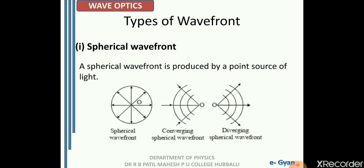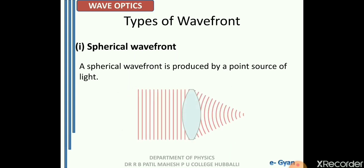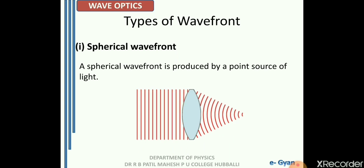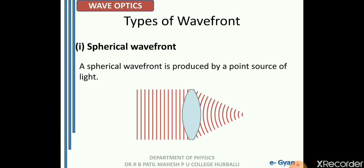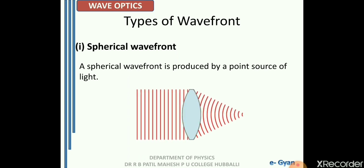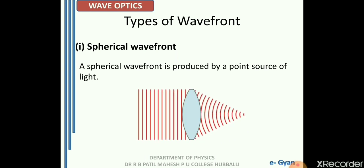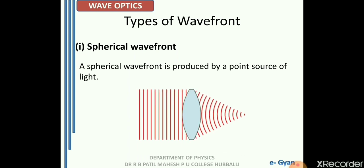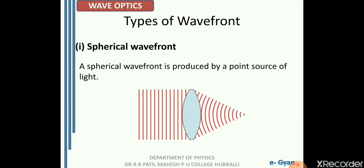We have seen the diverging type. Now let us understand what we mean by converging. When light passes through a lens, the light rays tend to meet at a point, and this kind of converging rays produces a converging spherical wave front. So here the wave front is a converging spherical wave front.